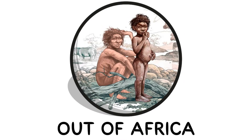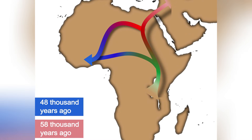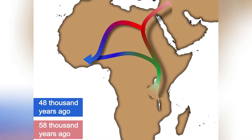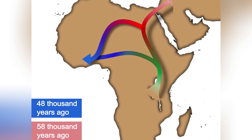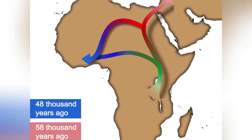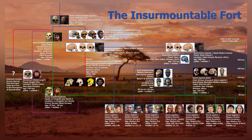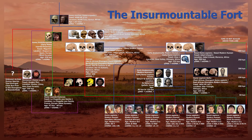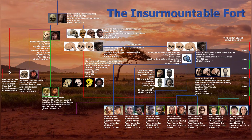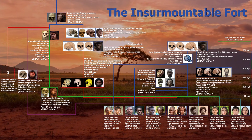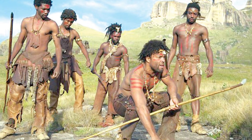Out of Africa. The out-of-Africa migration refers to the movement of anatomically modern humans from Africa into the rest of the world, beginning roughly 70,000 to 50,000 years ago. Genetic, fossil, and archaeological evidence overwhelmingly supports Africa as the birthplace of modern humans, with all non-African populations descending from a small subset of African ancestors.